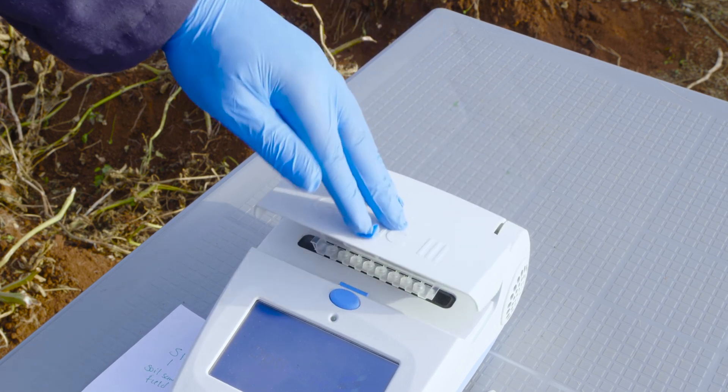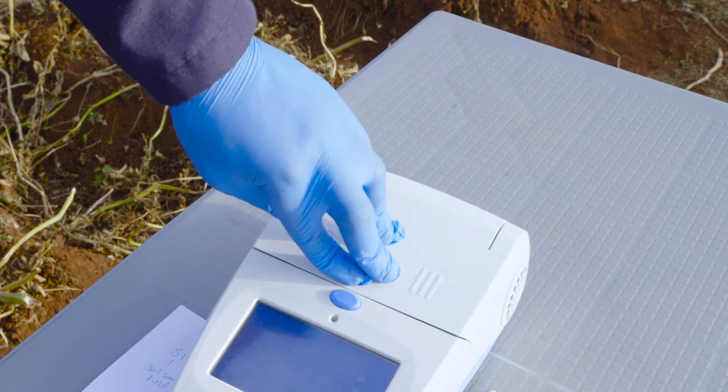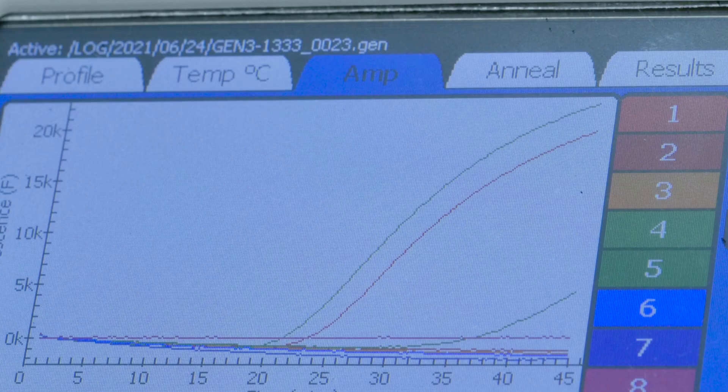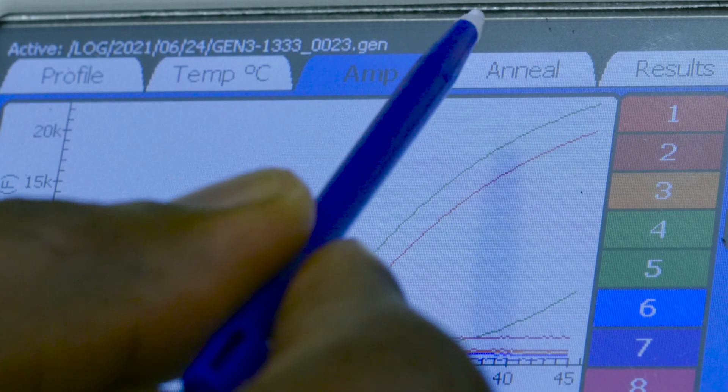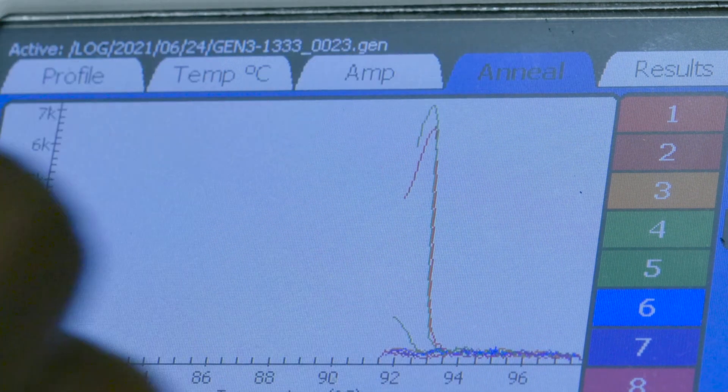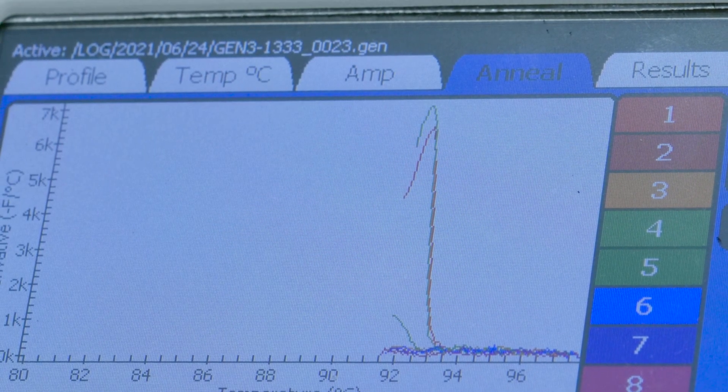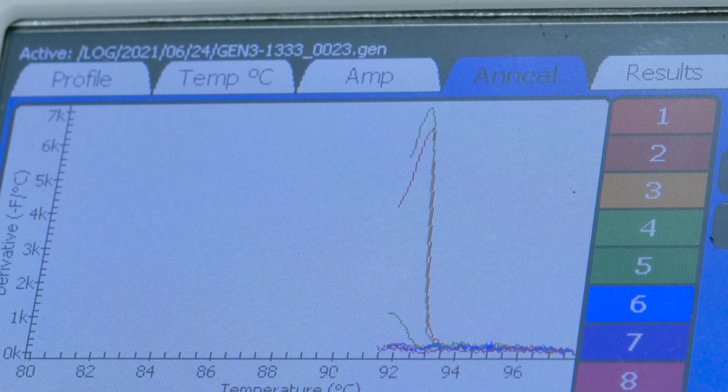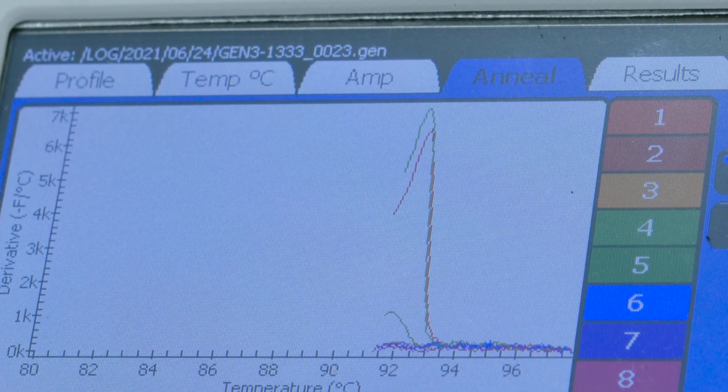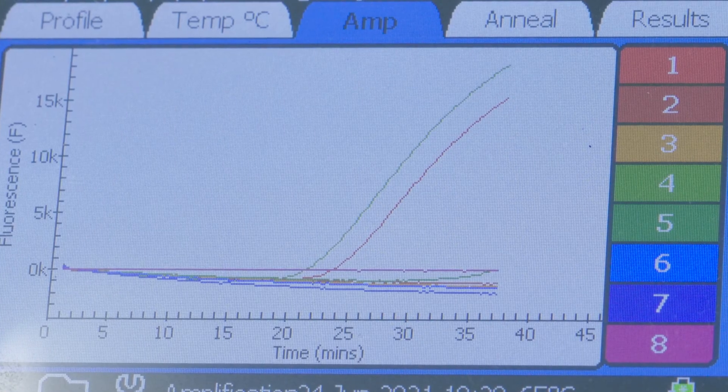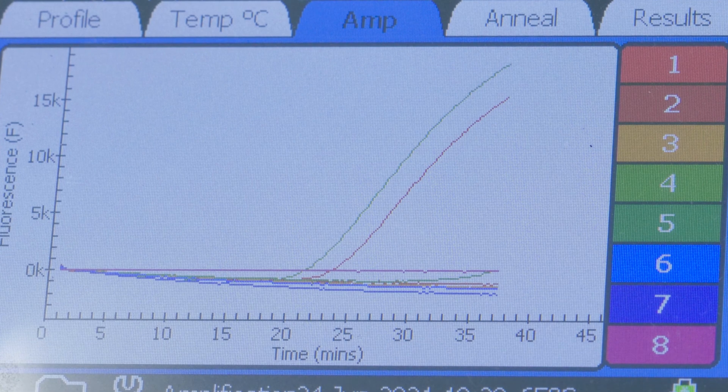If this doesn't happen, you might want to repeat the test and run a complementary test as this could be an indication that something else might have been amplified. If there is an amplification at any time while the anneal derivative is at the right temperature, this test should be considered positive. The time to positivity may indicate the concentration of the bacteria. The faster the amplification, the more bacteria present.